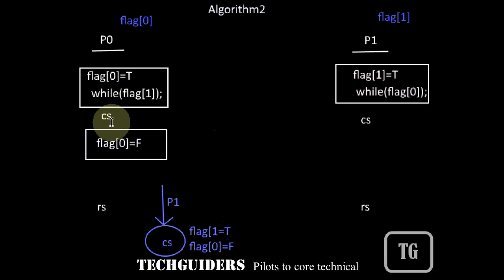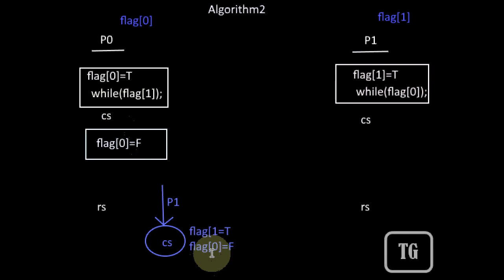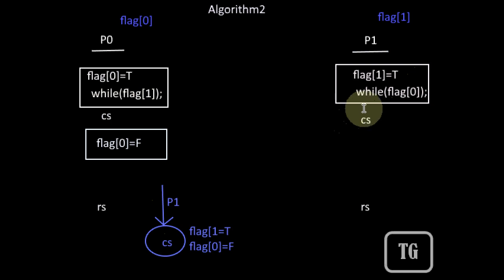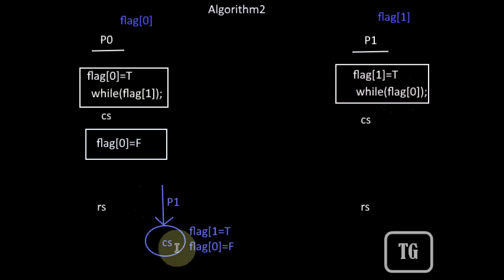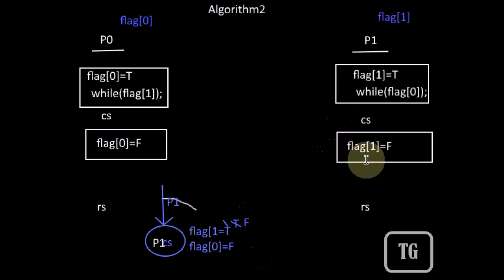When P0 completes its critical section, in the exit section code it will set its flag to false, giving a chance to the other process. P1, who is waiting in the while loop, will identify that flag[0] is false and can now enter the critical section. Similarly, when P1 completes its critical section, in its exit section code it will set its flag to false.